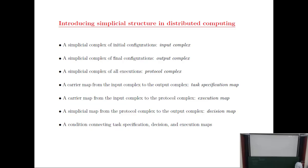This is the general idea — protocol complexes depend on the protocols. The task itself, whether consensus or symmetry-breaking or something else, is specified as a way to say for any set of inputs, what is the set of allowed outputs. In simplicial language, for every simplex in the input complex, we associate a subcomplex of the output complex. This is not a simplicial map but what we call a carrier map — it takes simplices to subcomplexes — and one usually imposes additional conditions on these carrier maps.